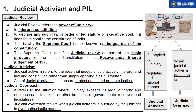Judicial review is the power of the judiciary to interpret the constitution. Wherever the constitution has provisions that are ambiguous, confusing, or lack clarity, the power to interpret those provisions and explain their correct meaning lies with the judiciary - primarily the Supreme Court. Even High Courts can perform such functions in certain cases. The first aspect of judicial review is the ability and power to interpret the constitution wherever provisions are ambiguous.